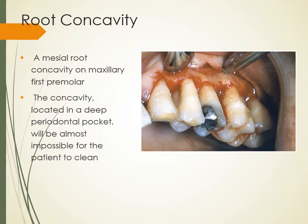The mesial root concavity on the maxillary first premolar is the most common root concavity. Teeth numbers 5 and 12 on the mesial almost always have calculus. You really have to work at getting the explorer tip around that area — an oblique stroke is recommended to feel in that concavity. It's located in a deep periodontal pocket and is almost impossible for the patient to clean themselves, which is why it's important to be able to get in there and detect it.